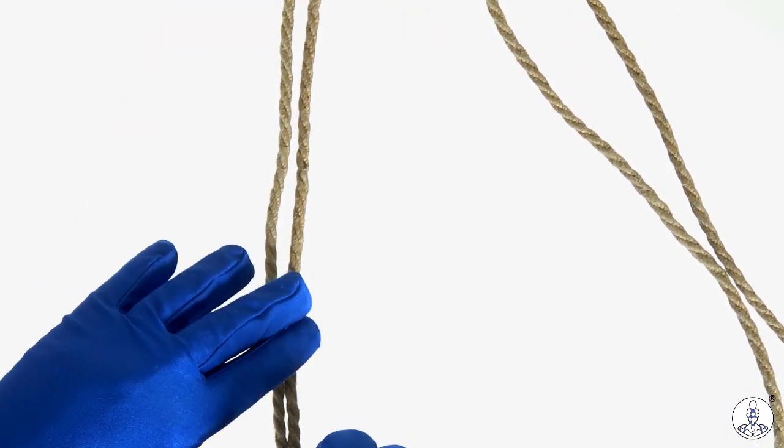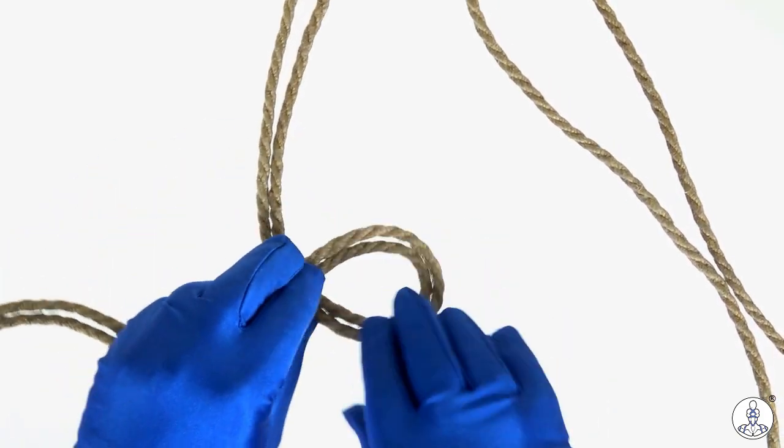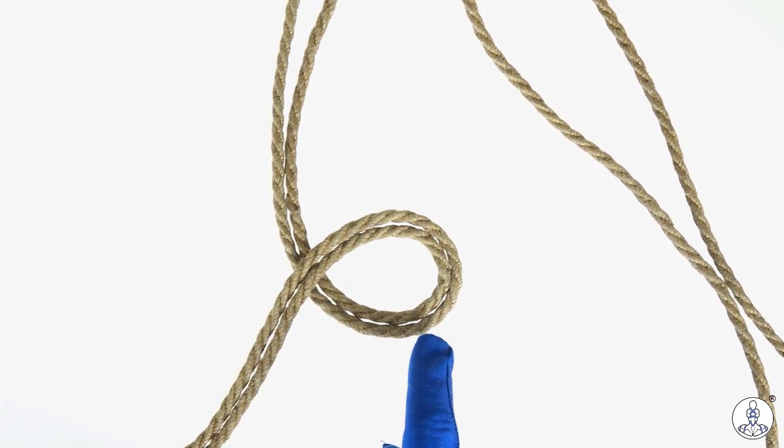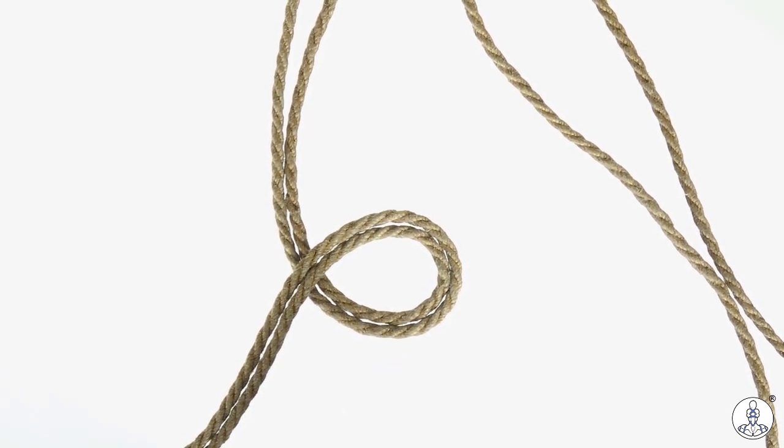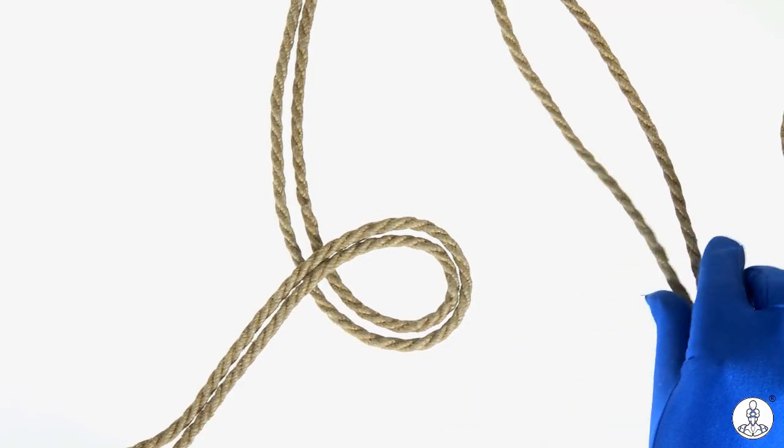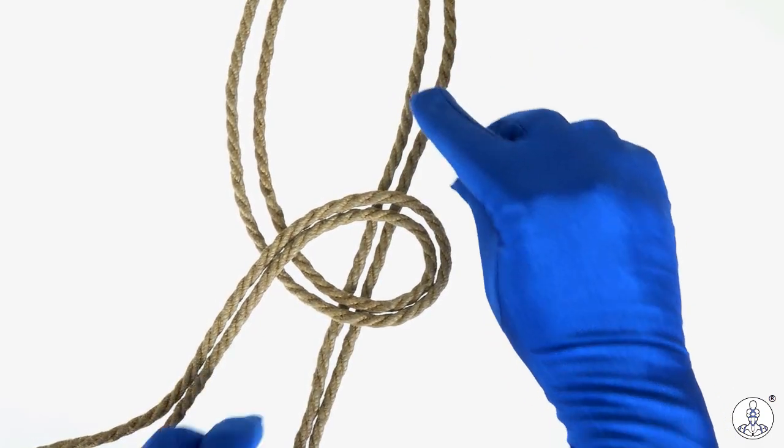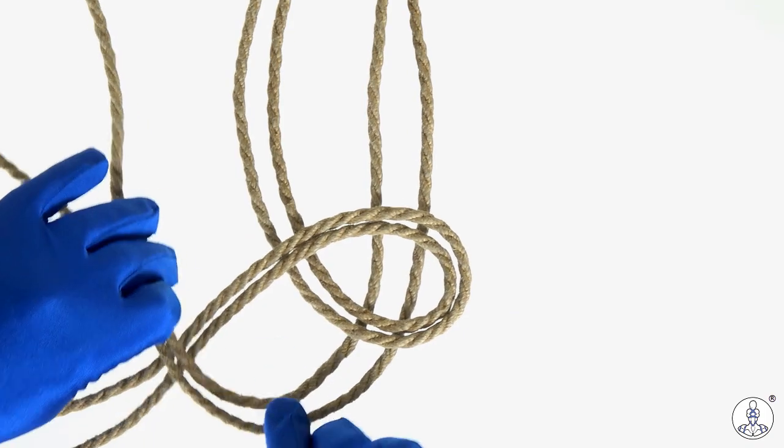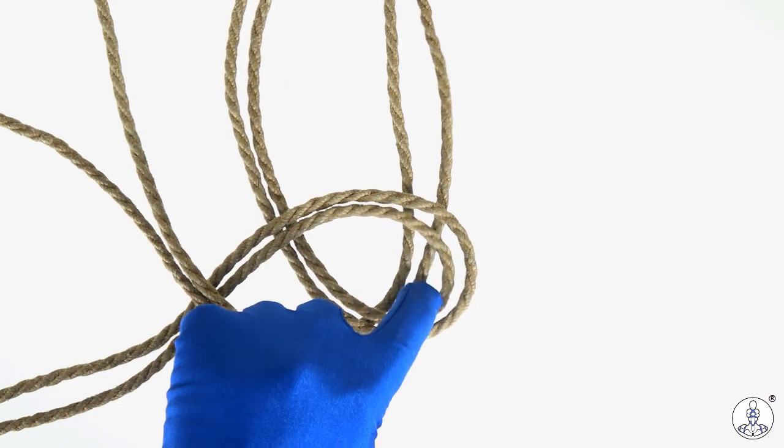Making sure my ropes are parallel and even, I'm just going to create a loop. You'll note that I've left the two strands of the rope parallel as they go around. Now take the other side. Lay the loop that you've created on top of those strands, making sure they're even and parallel. And then lay those two strands on top of the other side. Then it's going to go under, over, under, over.